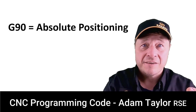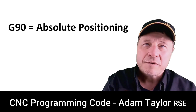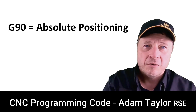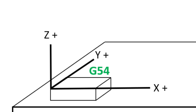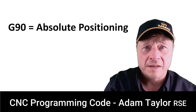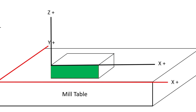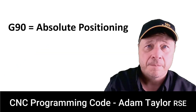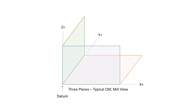G90 is absolute positioning. We've already talked about putting a part on the mill table and finding its X position, Y position, and Z position, or the datum. We've already talked about programming which plane to work on — G17, G18, or G19 — and we understand the axes that we can program for each of those planes.